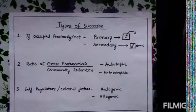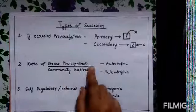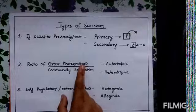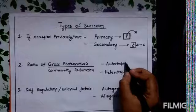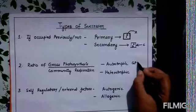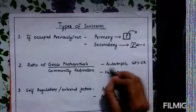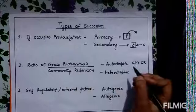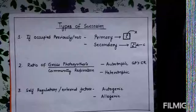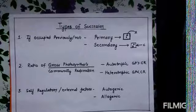The second classification is based on the ratio of gross photosynthesis and community respiration. Photosynthesis and respiration are essential for the life of any plant, and photosynthesis occurs only in plants, not in animals. There are two types: autotrophic and heterotrophic. In autotrophic succession, the gross productivity is more than the community respiration because autotrophs are present and they perform photosynthesis. In heterotrophic succession, the gross photosynthesis would be less in comparison to the community respiration.